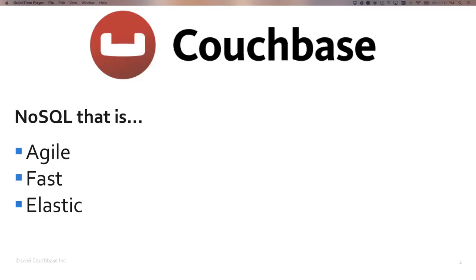If you're new here, Couchbase Server is a distributed NoSQL database that's agile, fast, and elastic. Couchbase makes it easier and faster for developers to build applications using the power of SQL with the flexibility of JSON.